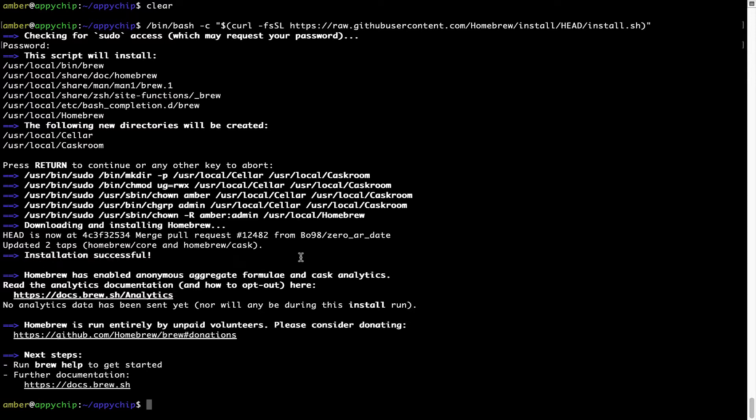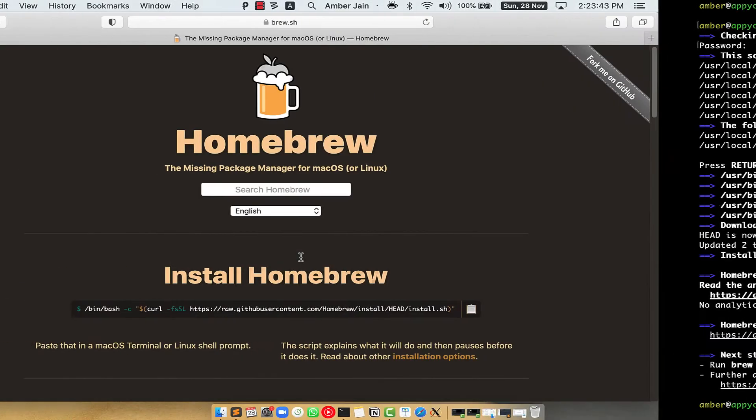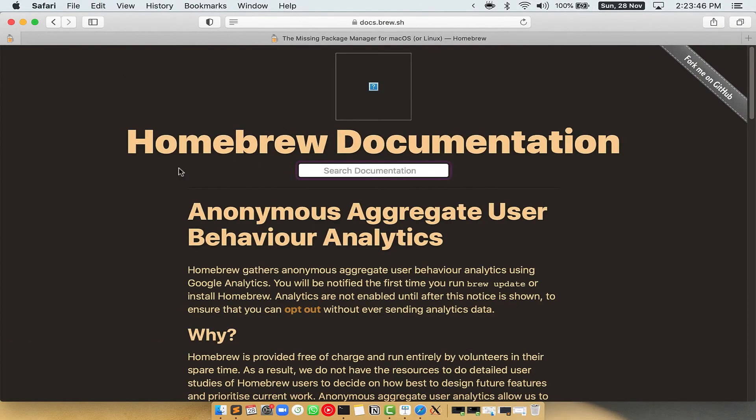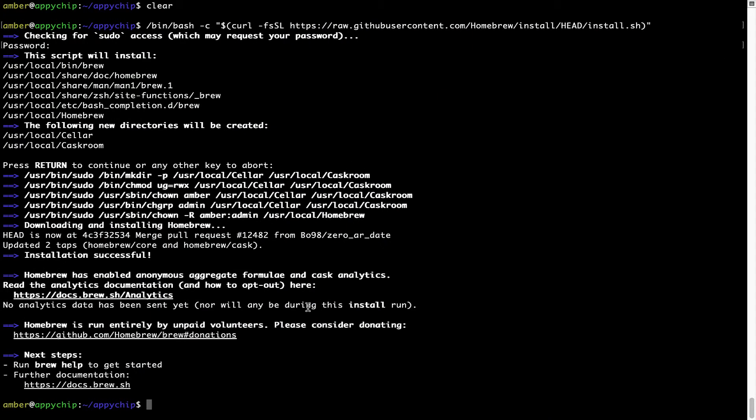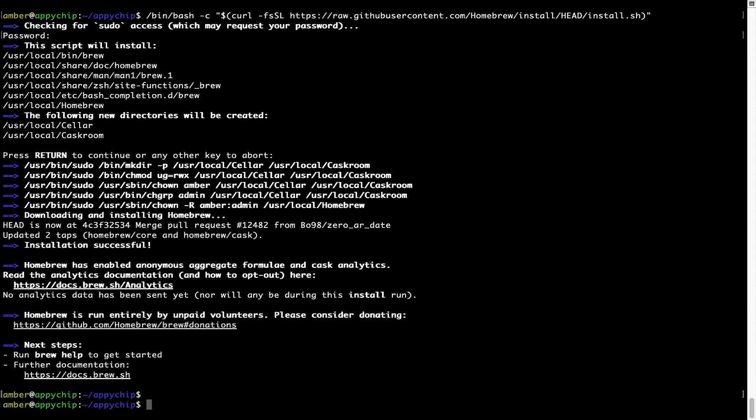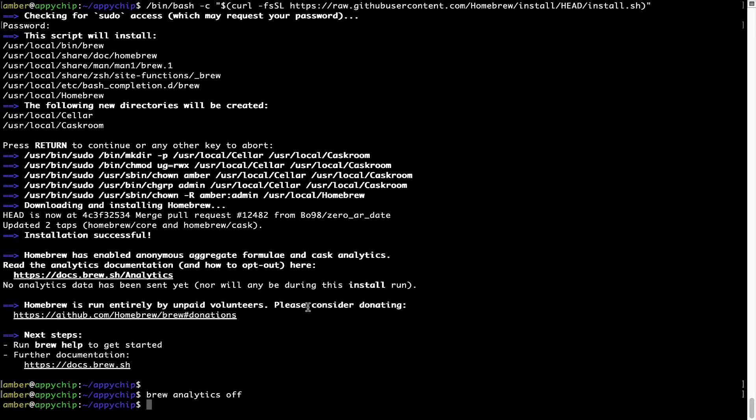Now before we proceed, I would like to highlight that brew collects anonymous usage data via Google analytics. As you can see on this page, if you want to opt out, you can simply run this command brew analytics off and press enter, which simply disables the anonymous usage data collection on your Mac.